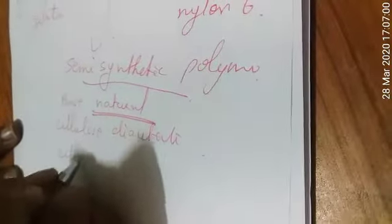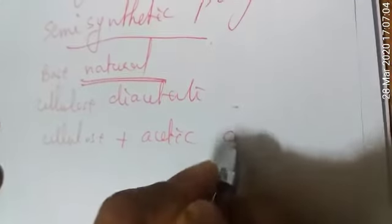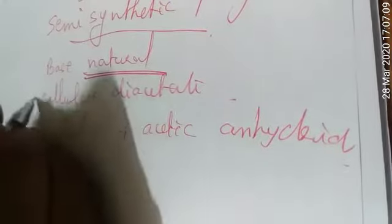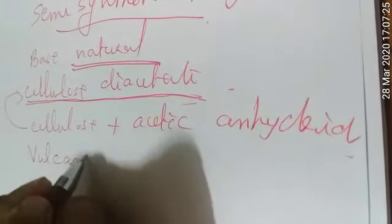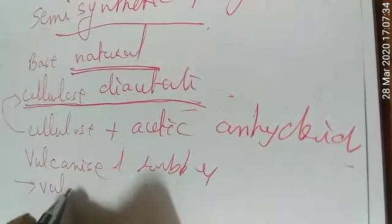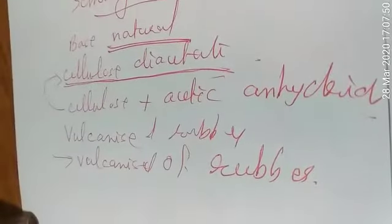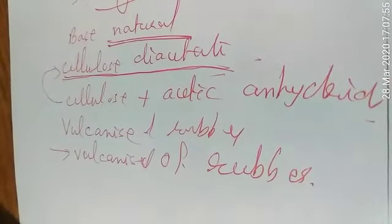The third group is semi-synthetic polymers. Here the base is a natural polymer which undergoes synthesis in the lab. For example, cellulose diacetate is formed by the acylation of cellulose with acetic anhydride. Another example is vulcanized rubber, which is formed by the vulcanization of rubber. So on the basis of origin, we classify polymers into three types: natural, synthetic, and semi-synthetic.